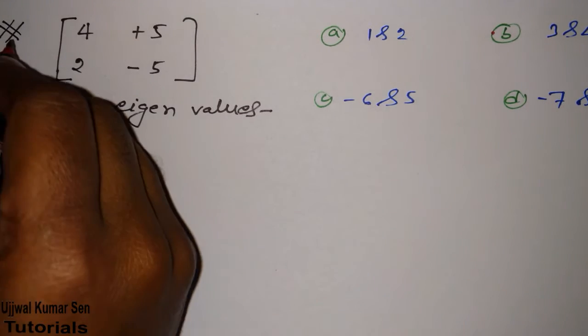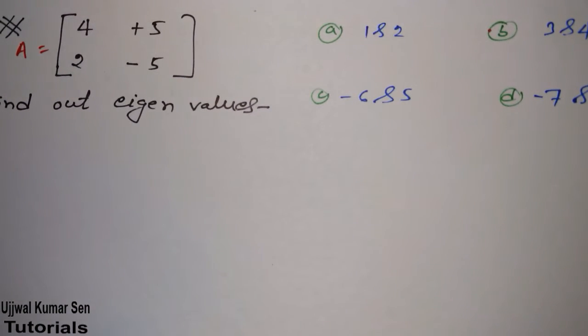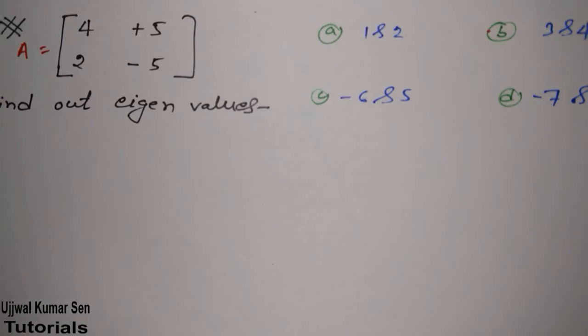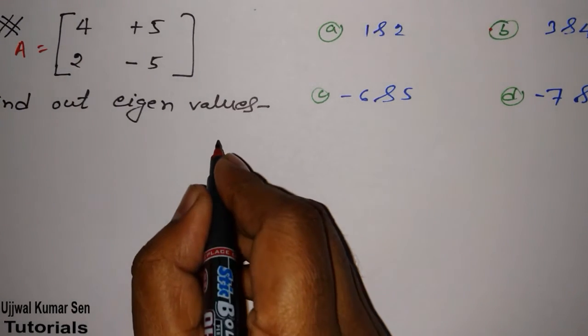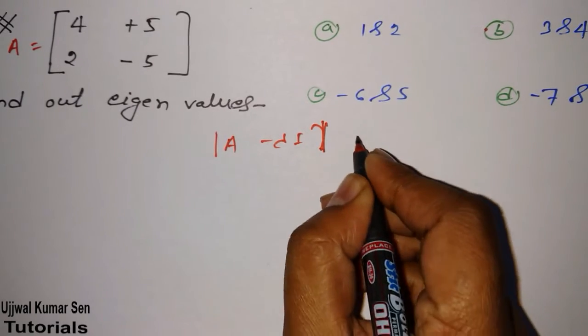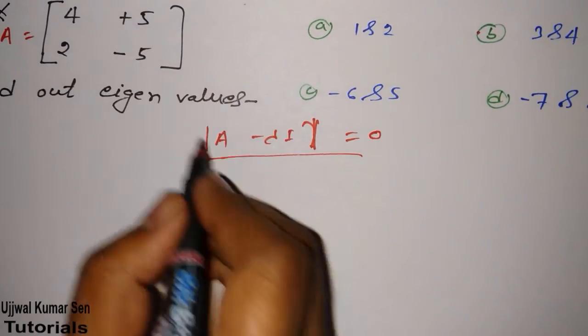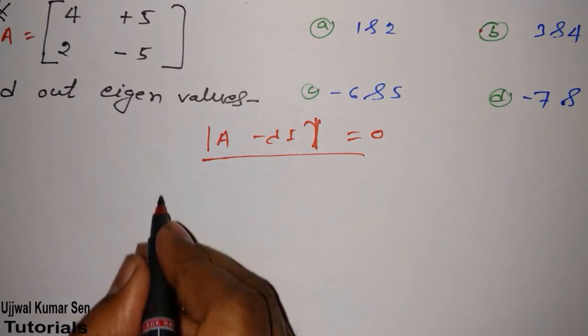Suppose that we have a given matrix A equal to this and this same question was asked in KD PVC M. For finding out eigenvalues we have to do A minus lambda I equal to zero. We have to write this matrix into this determinant form.